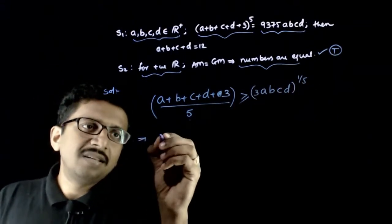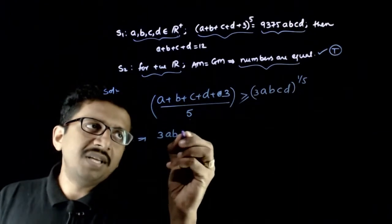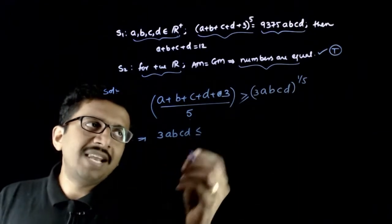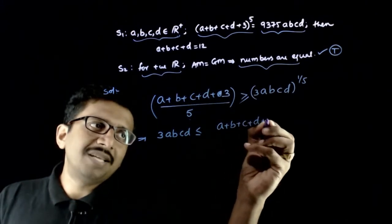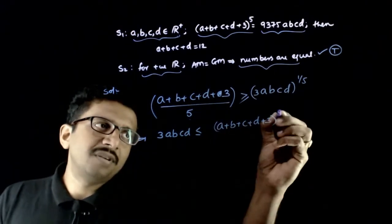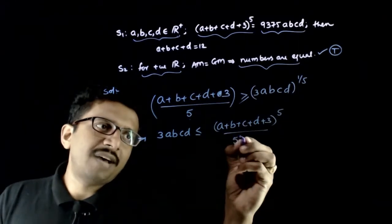This implies 3 times a, b, c, d will always be less than or equal to a plus b plus c plus d plus 3 power 5 divided by 5 power 5.